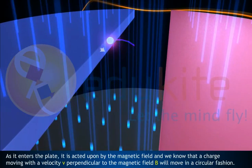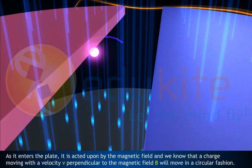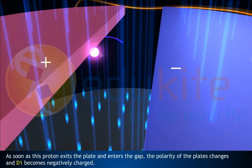As it enters the plate, it is acted upon by the magnetic field, and we know that a charge moving with a velocity V perpendicular to the magnetic field B will move in a circular fashion. As soon as this proton exits the plate and enters the gap,